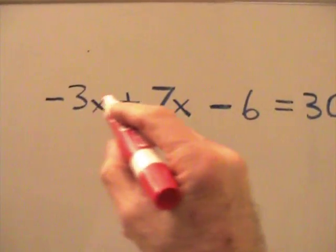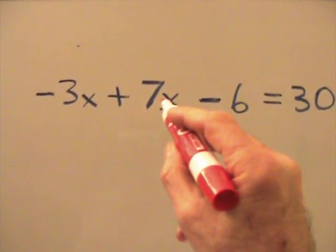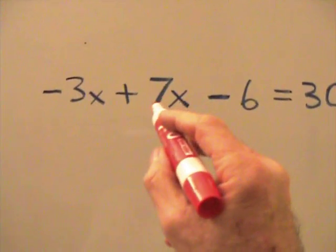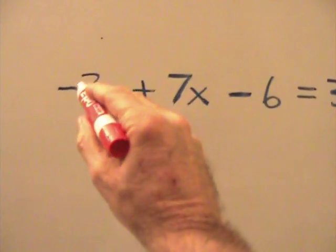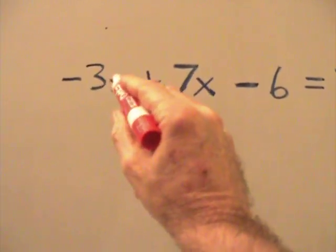Now the first thing we're going to do is combine our two like terms here. These terms are like because they consist of a number and a variable.